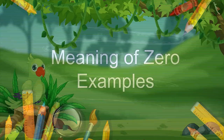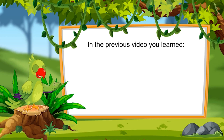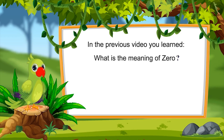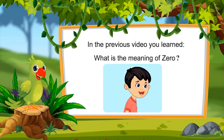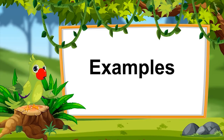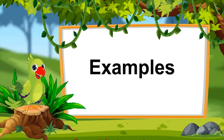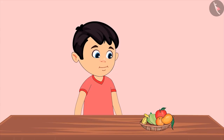In the last video you learned what is the meaning of zero, and when there is not a single object left, it is called zero. In this video we will see some examples of zero, in which we will develop an understanding of objects decreasing one by one.